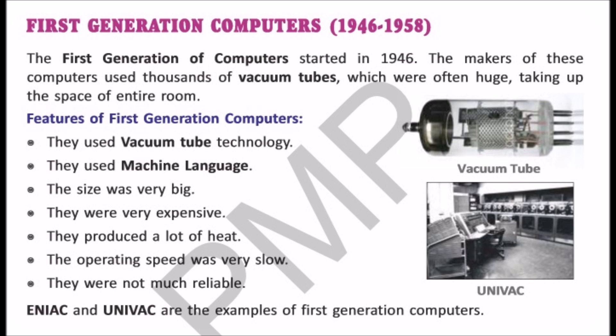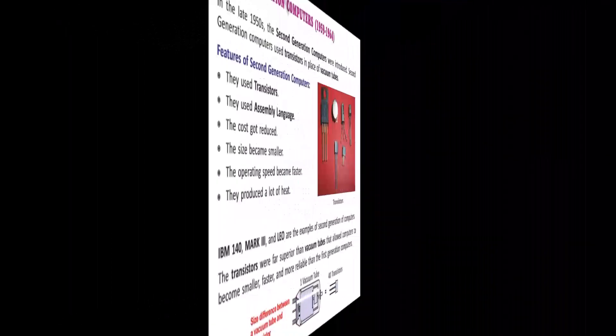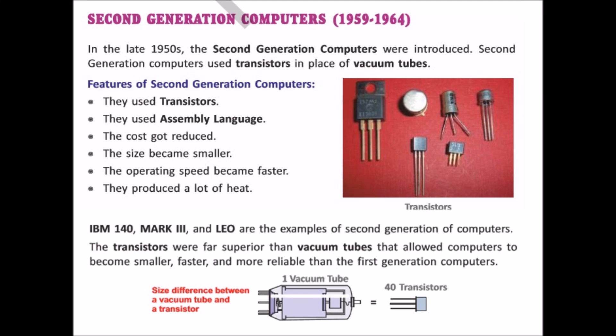Next is second generation computers, which were introduced in the late 1950s. Those computers used transistors in place of vacuum tubes. Size and cost were reduced a little and the speed improved. Still, they produced a lot of heat. IBM 1401 and Mark III are examples of second generation computers.